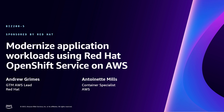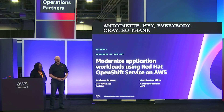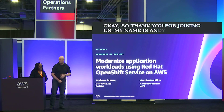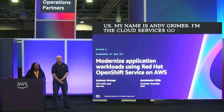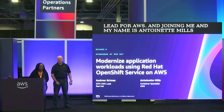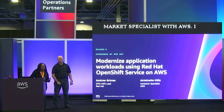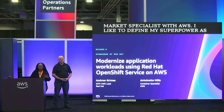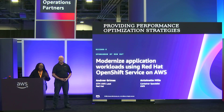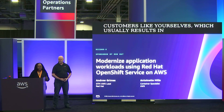Hey everybody! Thank you for joining us. My name's Andy Grimes, I'm the Cloud Services Go-To-Market Lead for AWS. And my name is Antoinette Mills, and I am a Senior Containers Go-To-Market Specialist with AWS. I like to define my superpower as providing performance optimization strategies for customers like yourselves, which usually results in ensuring that your containerized environments run smoothly.